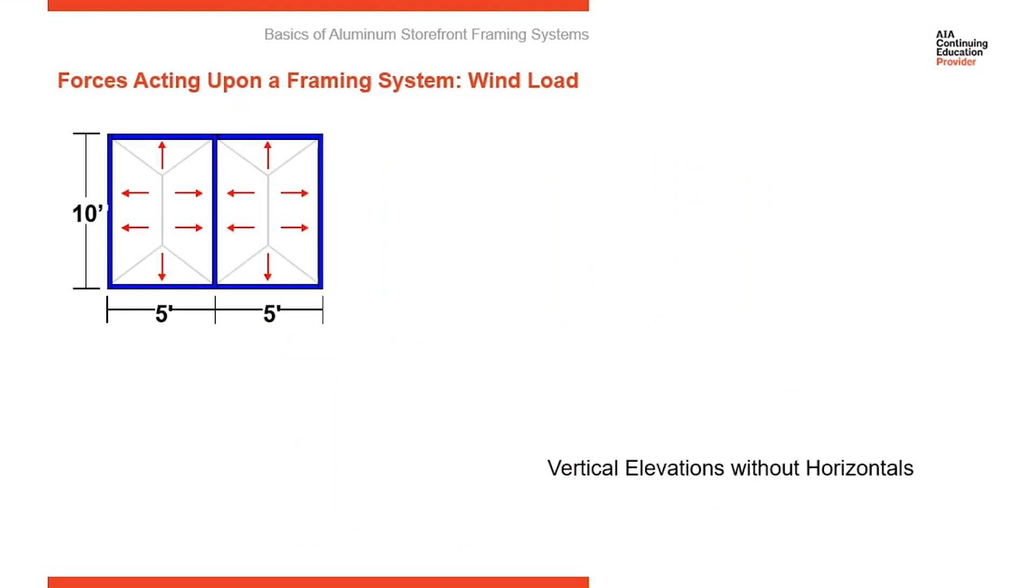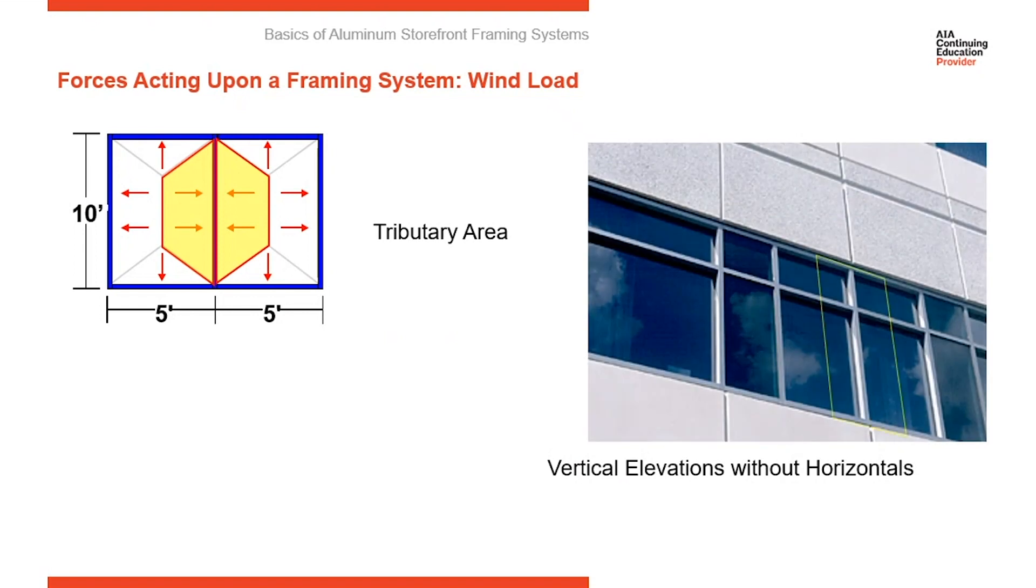So here now is that same vertical, that same elevation. It's 10 foot tall, 10 foot wide. We have an intermediate vertical in it. So you have five feet of glass on each side. So we start evaluating the wind upon that vertical. The first thing we want to define is the tributary area. And the tributary area is defined as the amount of surface area on each side of each vertical that the vertical has to support. So basically, you're looking at half the width of the glass on each side of it.